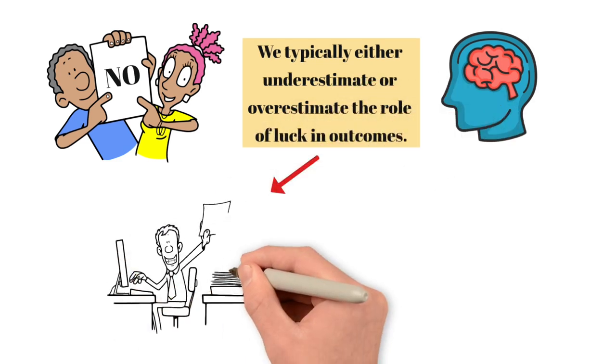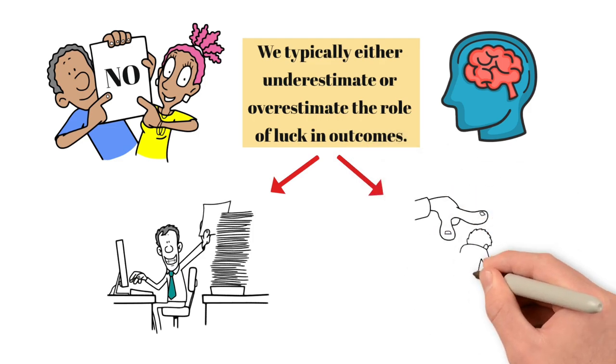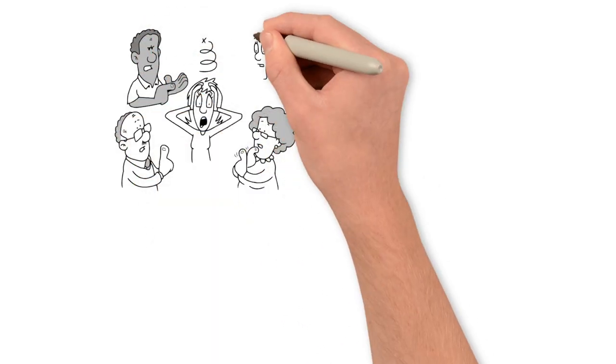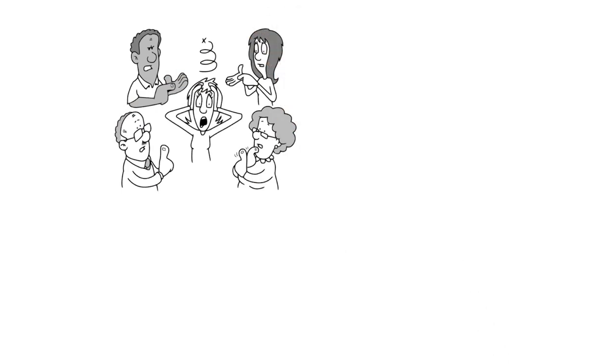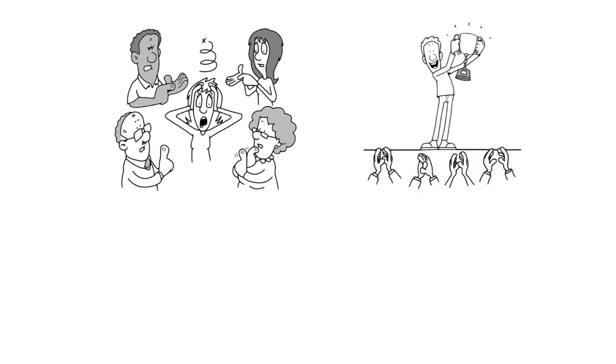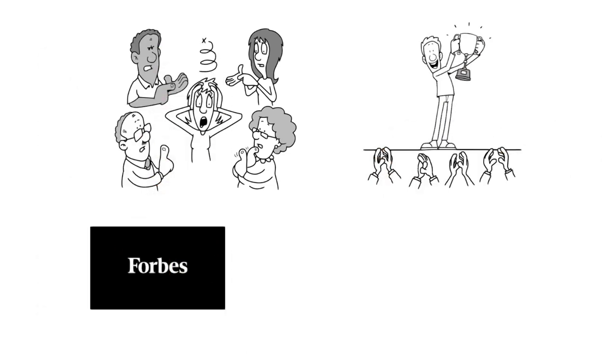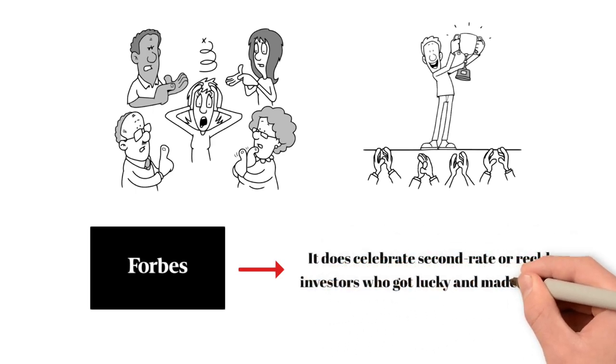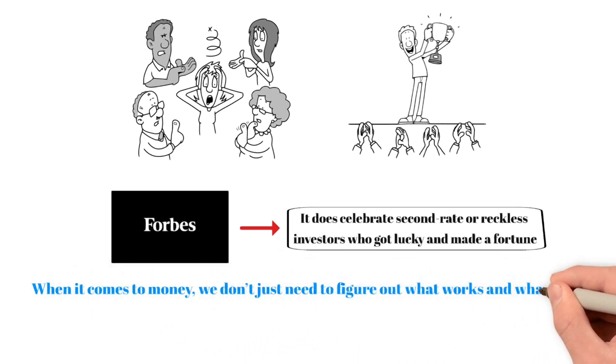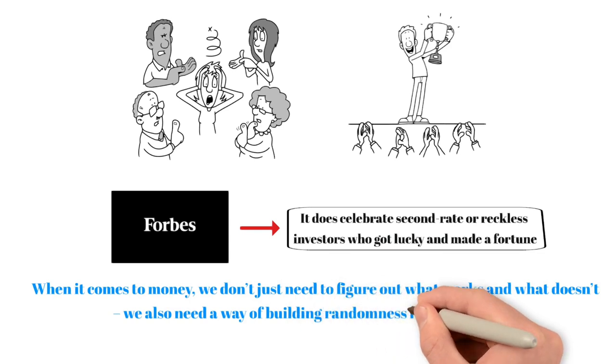That's down to human psychology. We typically either underestimate or overestimate the role of luck in outcomes. If we do well, it's because we worked hard. If we fail, it's because we were unlucky. If others fail, though, we aren't nearly as generous. In those cases, we don't attribute failure to bad luck, but to character flaws like laziness or short-sightedness. Our culture, which is obsessed with success, isn't much help here, unfortunately. Forbes doesn't celebrate brilliant investors who went broke because they were unlucky and the market took a sudden nosedive. It does celebrate second-rate or reckless investors who got lucky and made a fortune, however. When it comes to money, we don't just need to figure out what works and what doesn't. We also need a way of building randomness into our models.